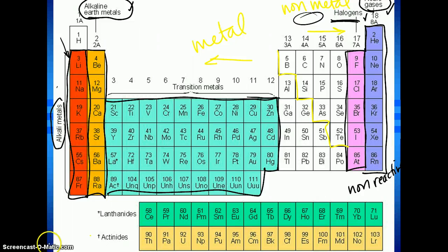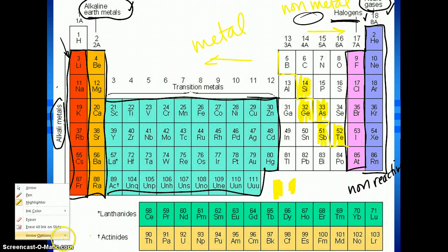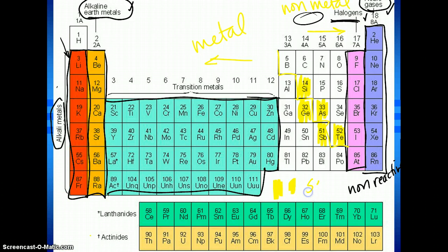So we'll use a highlighter. The only exceptions are these here. These, make sure I get all the right ones. These, right on this border that I made, these are considered metalloids or semi-metals. So these here equal semi-metal. All right, so those are kind of a cross between metals and non-metals. They're a little bit in between.